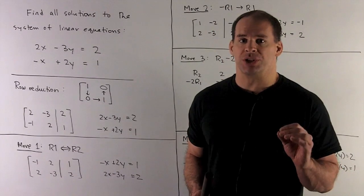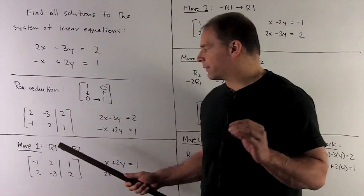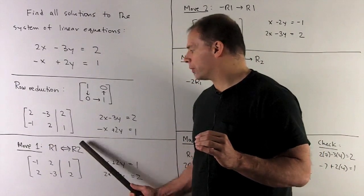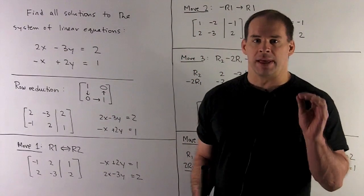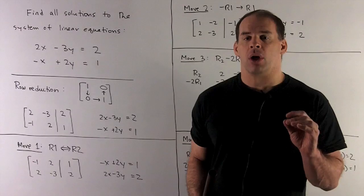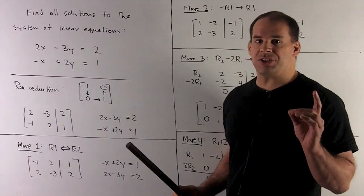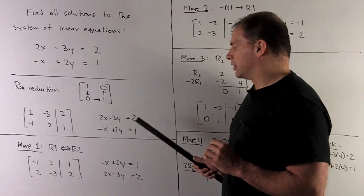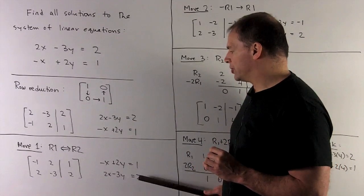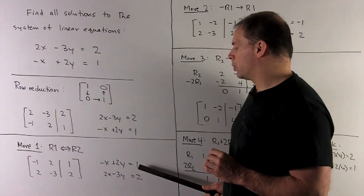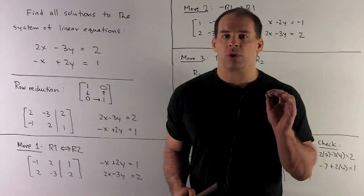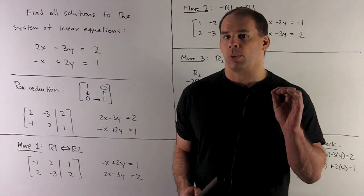Let's first start by switching the rows. So that's my first move. Switch row 1 with row 2. That doesn't actually change our equations at all. All we did was change the order that the equations are written in. So for instance, if we have them written off on the side, that takes equation 1 to equation 2, equation 2 to equation 1. So no real change in what we're doing yet.